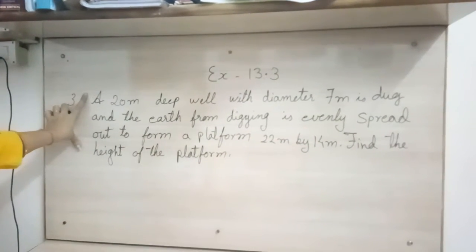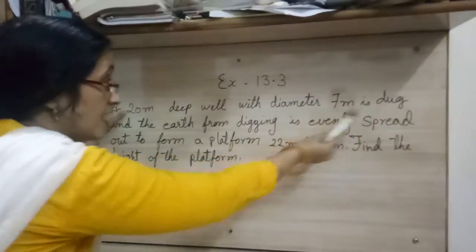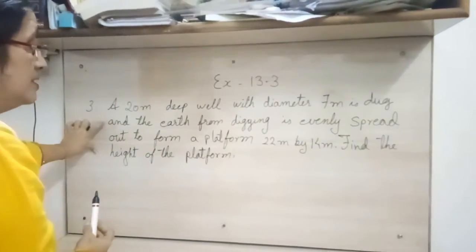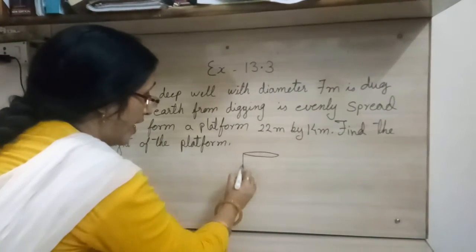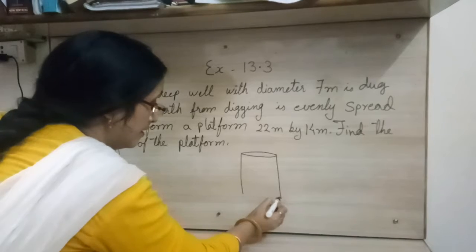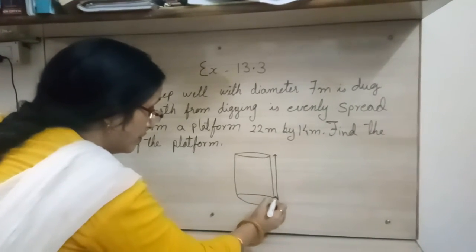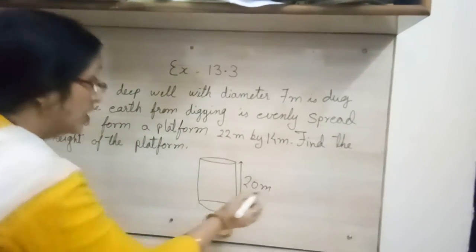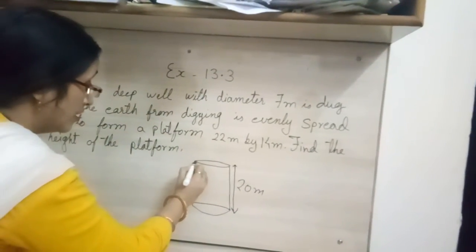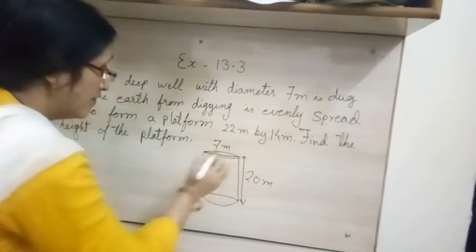In this what they are telling? They are telling a 20 meter deep well with diameter 7 meter is dug. Means we are digging one well and suppose this is the well. So deep, yes 20 meter and diameter. Diameter they are given. They have given diameter as 7 meter.